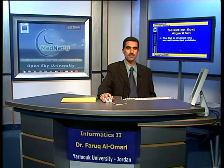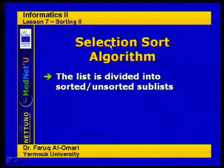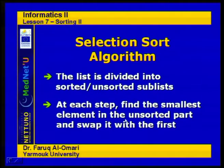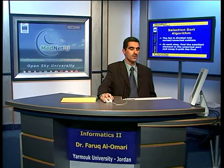Selection sort algorithm. This is an internal sorting algorithm. The list is divided into two sublists: a sorted sublist and an unsorted sublist. At each step, we look for the smallest entry in the unsorted list and put it as the last entry in the sorted list, by swapping it with the first element in the unsorted sublist.